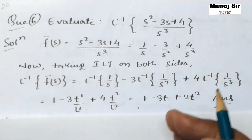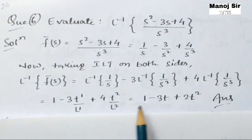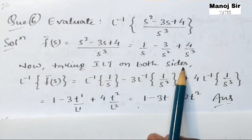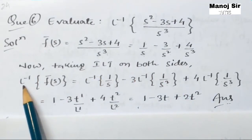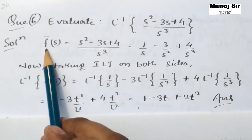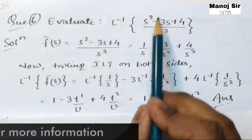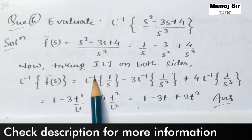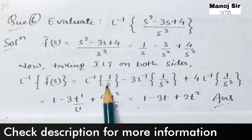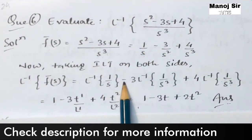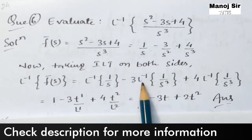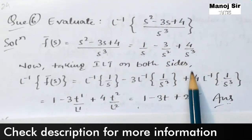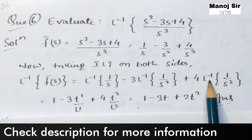Now we are going to apply the inverse Laplace transform to both sides. Taking the inverse Laplace transform of f̄(s), this equals the inverse Laplace transform of 1/s, minus 3 times the inverse Laplace transform of 1/s², plus 4 times the inverse Laplace transform of 1/s³.